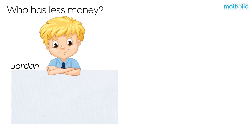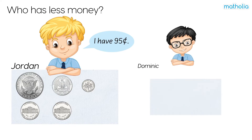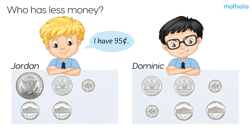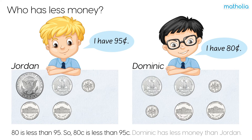Who has less money? Jordan says, I have 95 cents. Dominic says, I have 80 cents. 80 is less than 95. So 80 cents is less than 95 cents. Dominic has less money than Jordan.